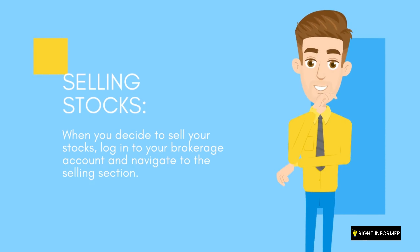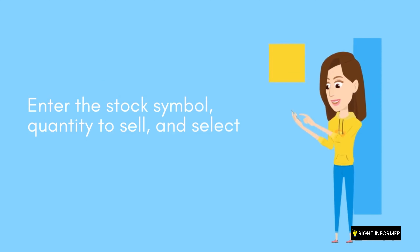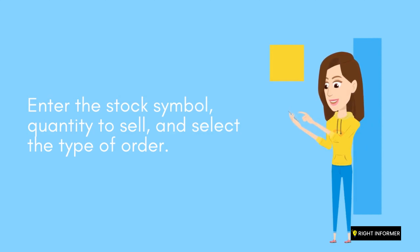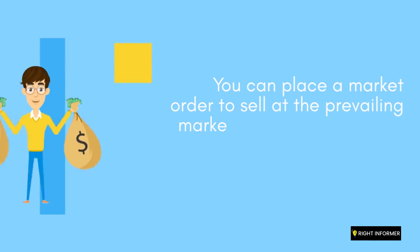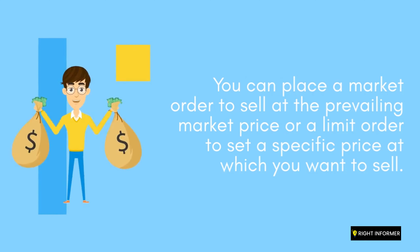When you decide to sell your stocks, log into your brokerage account and navigate to the selling section. Enter the stock symbol, quantity to sell, and select the type of order. You can place a market order to sell at the prevailing market price, or a limit order to set a specific price at which you want to sell.